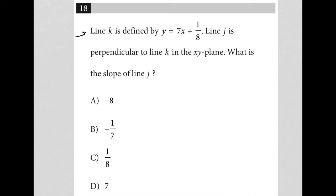This question says line K is defined by Y equals 7X plus 1/8. Let's keep in mind this is in Y equals MX plus B form, meaning that our slope M is equal to 7 and B, our Y-intercept, is equal to 1/8.